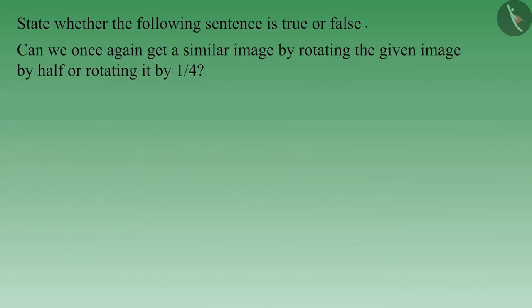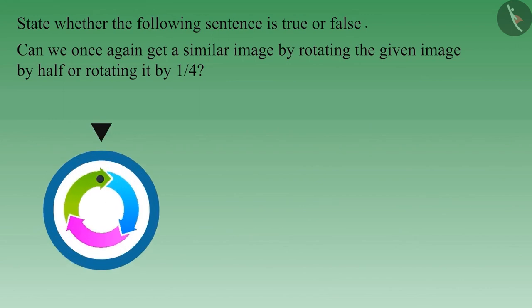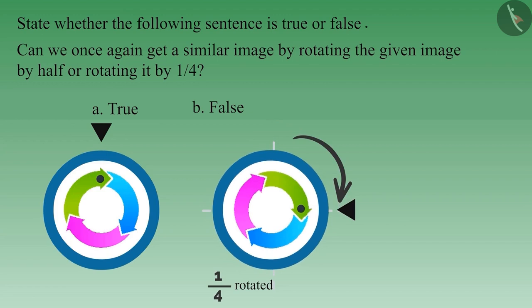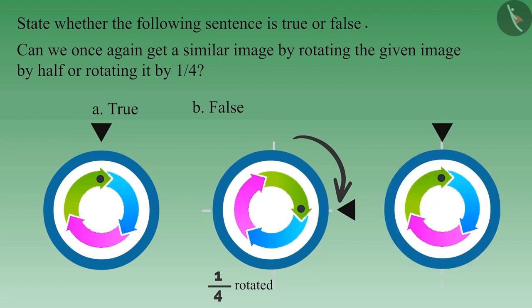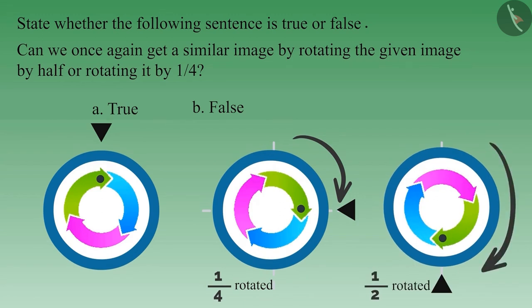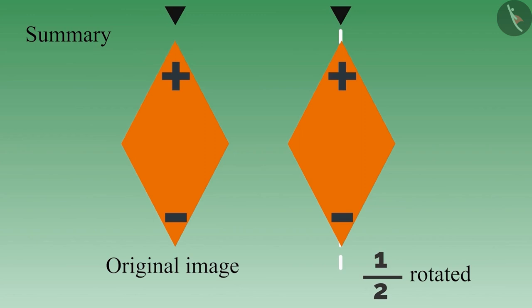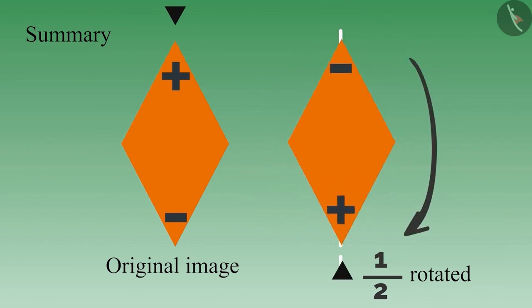Can we get the same image by rotating the given image by half or by one quarter? If your answer is yes, think again. If we turn this image by one quarter it will look something like this, and if we rotate the original image by half it will look like this. You can see that under no circumstance does it look like before. Therefore this statement is false.